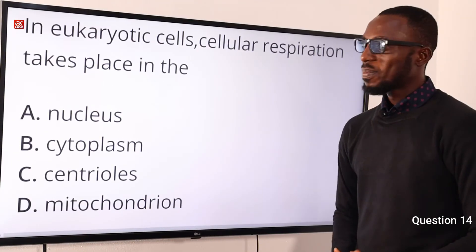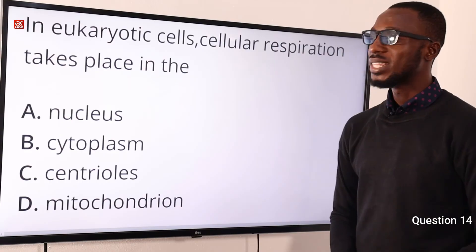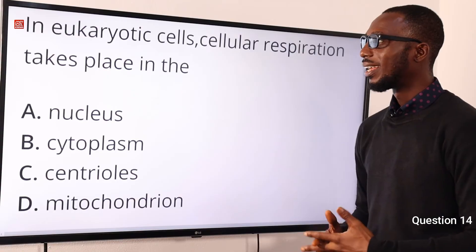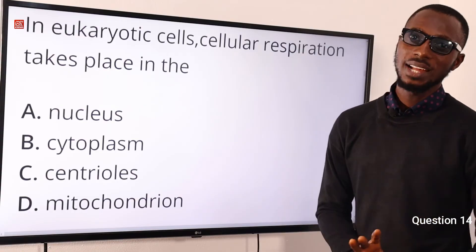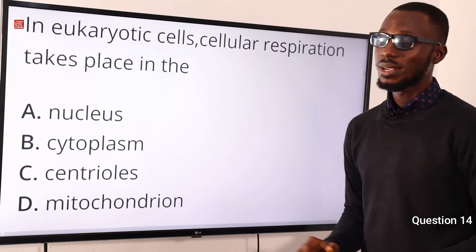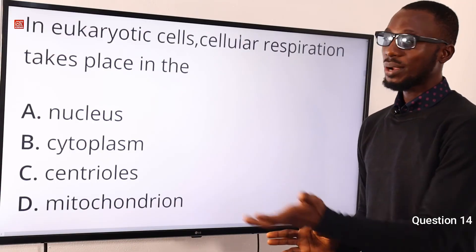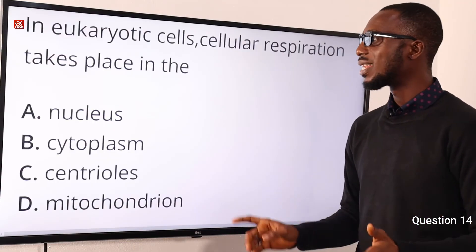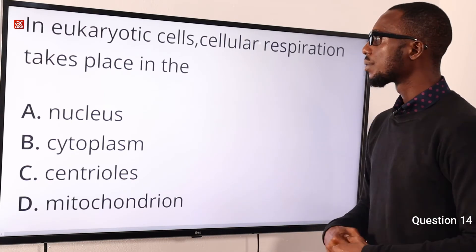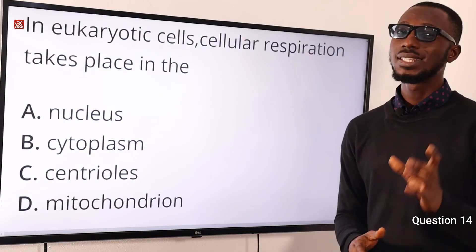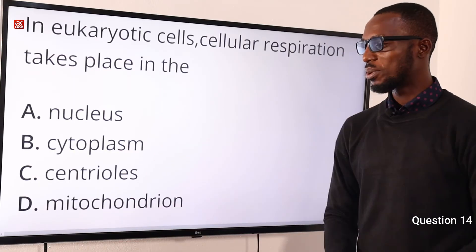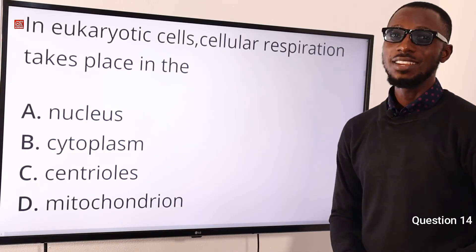Number 14. In the eukaryotic cell, cellular respiration takes place where? Talking about the eukaryotic cell — it is complex, with a well-defined nucleus — compared to the prokaryotic cell. For prokaryotic cells, you're talking about bacteria. For eukaryotic, you're talking about fungi, plants, animals. Cellular respiration takes place in the mitochondria. The correct option is option D for mitochondria.